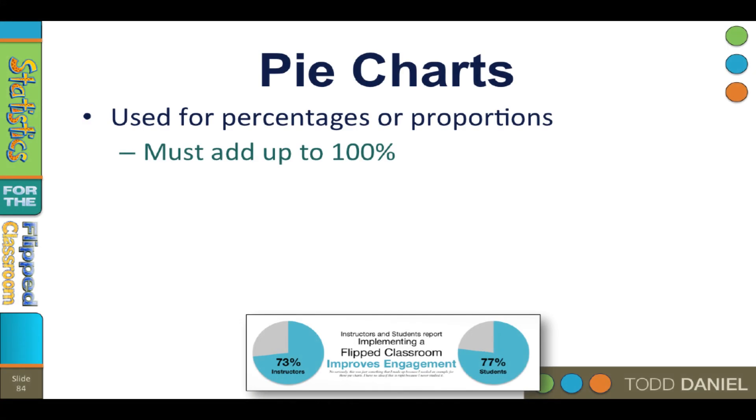Pie charts show data in a circle with slices of approximate size for each percentage. Pie charts display proportions or percentages. Therefore, the pie chart must always add up to 100%. You cannot use a pie chart for means or simple counts or any data that does not add up to 100%. And you must include all parts of the whole, meaning that you will probably need to include an other category.